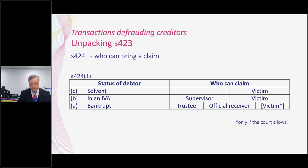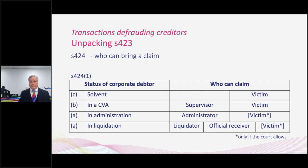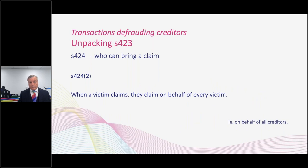Victims have the right to bring a claim. Where the debtor is bankrupt, the office holder or official receiver has the right to bring a claim. In that case, the rights of the victims themselves to bring claims are restricted — they can only bring the claim with permission of the court. The rules are similar for corporate insolvencies: victims normally have the right to bring a claim and the supervisor of a CVA will have the right to bring a claim. But where the company is in liquidation or administration, it's the office holder who has the primary right, and victims can only bring the claim if the court grants them permission.